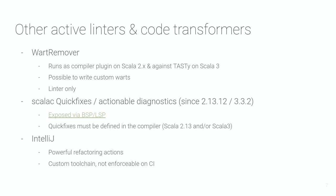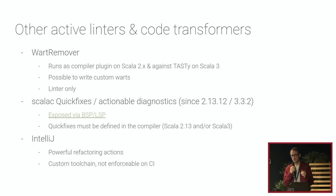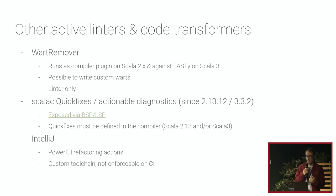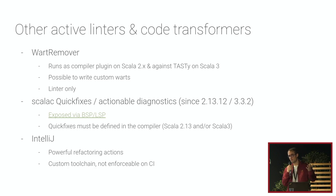There are a few other options for linters and code transformers. The first is WartRemover — also very mature — which works at the compiler level, so you need to understand compiler internals and write things twice: once for Scala 2 and once for Scala 3. It's also a linter only, so you don't have the capability to rewrite your code.